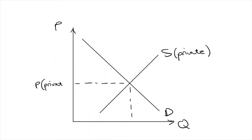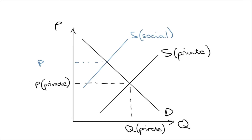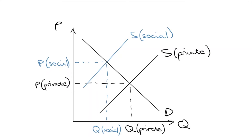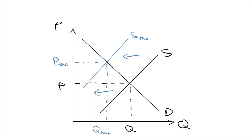The government could choose to influence resource allocation like this because there could be negative externalities — social or environmental costs not taken into account by the price mechanism. An example is the tobacco excise: the government imposes a tax on cigarettes because of health issues and pollution not reflected in the low price, increasing the price and decreasing production, so fewer resources are allocated to cigarette production.